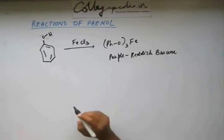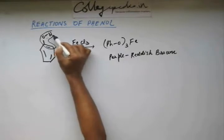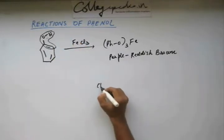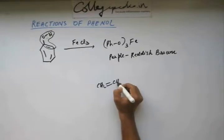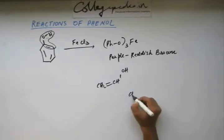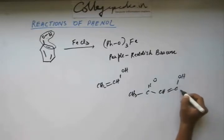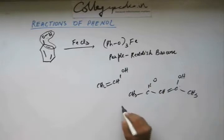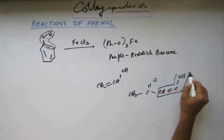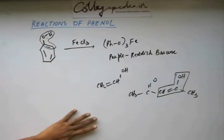This test is also given by enols because in phenol you can observe this is a kind of enol - you have alkene and you have alcohol. So in general any enol will give this test. For instance, this test would be given by other compounds with enol groups as well. This is in general a test for any enol, and phenol being an enol will give this test.